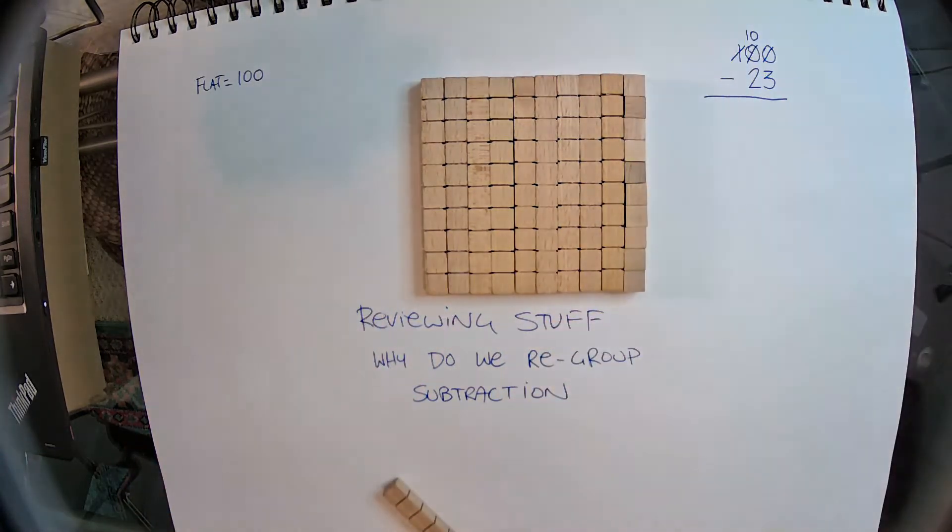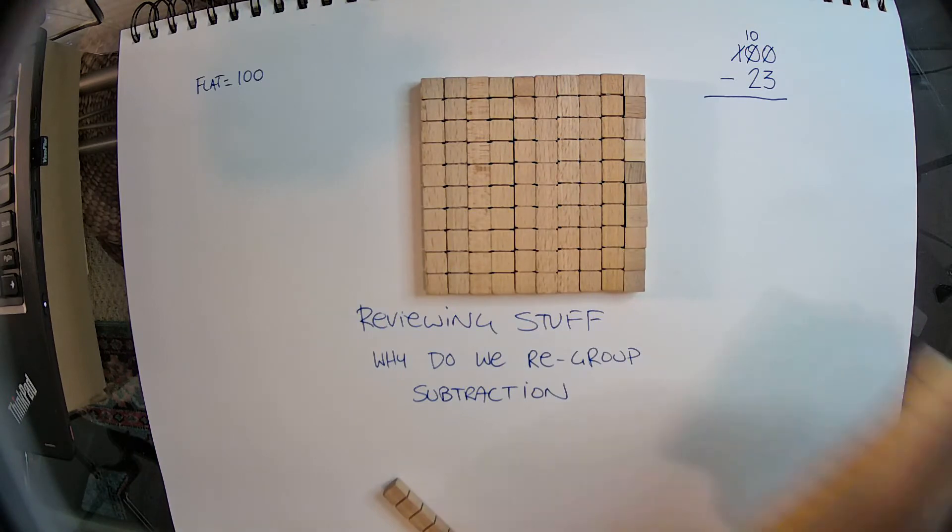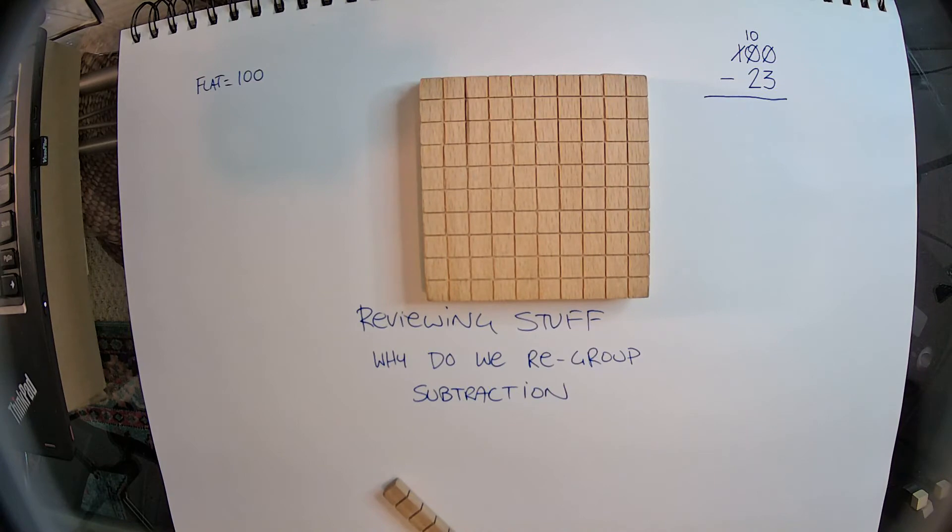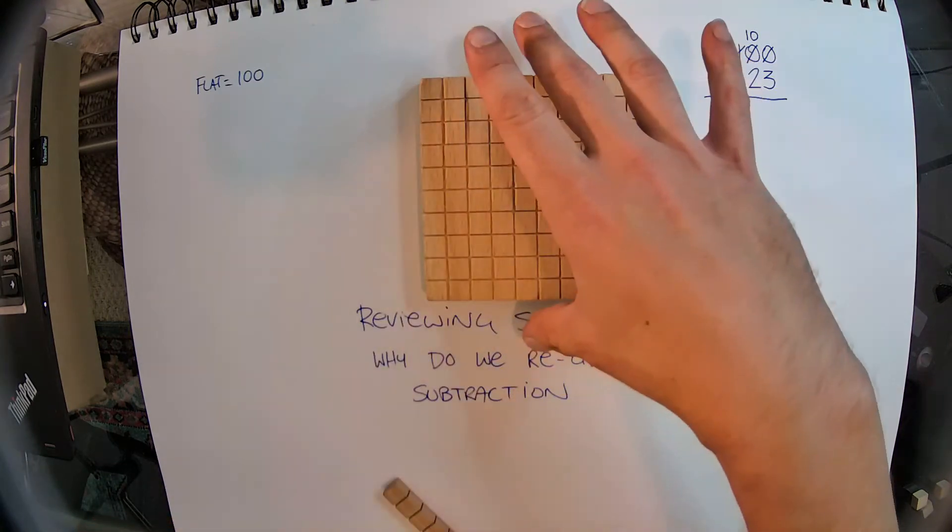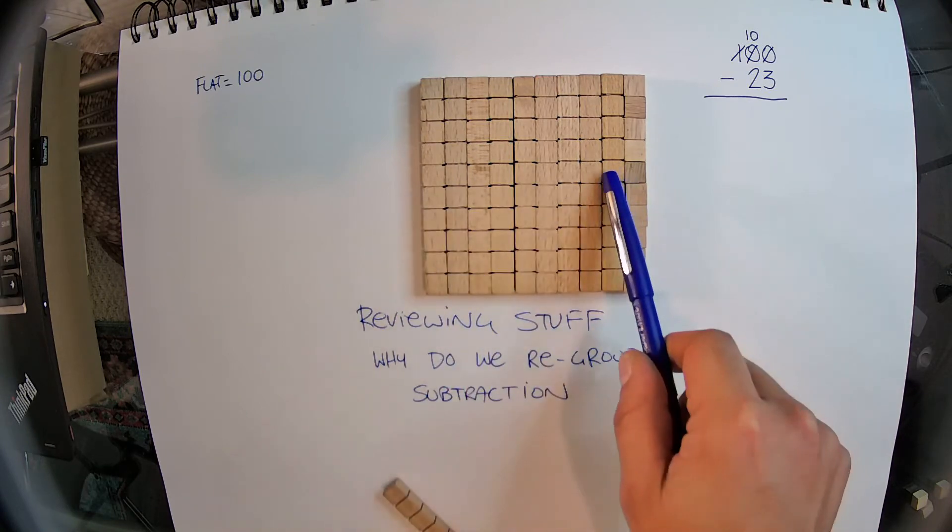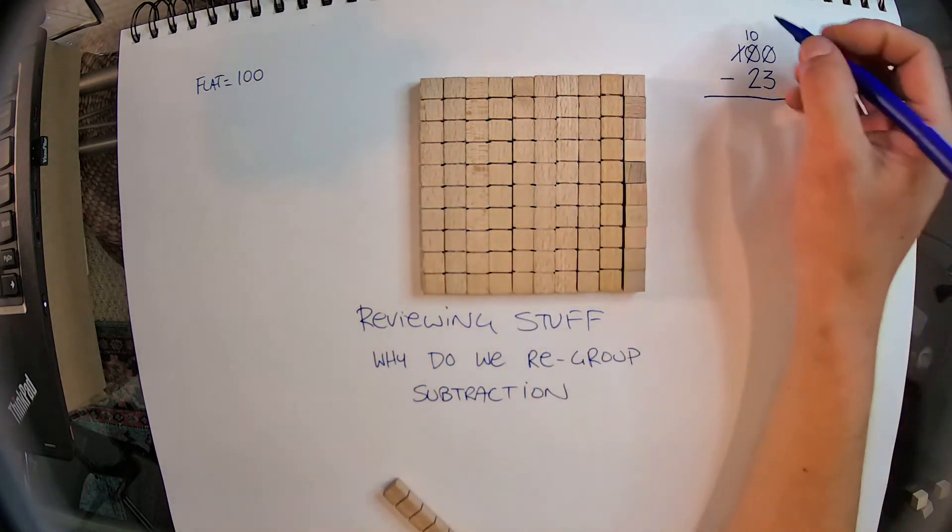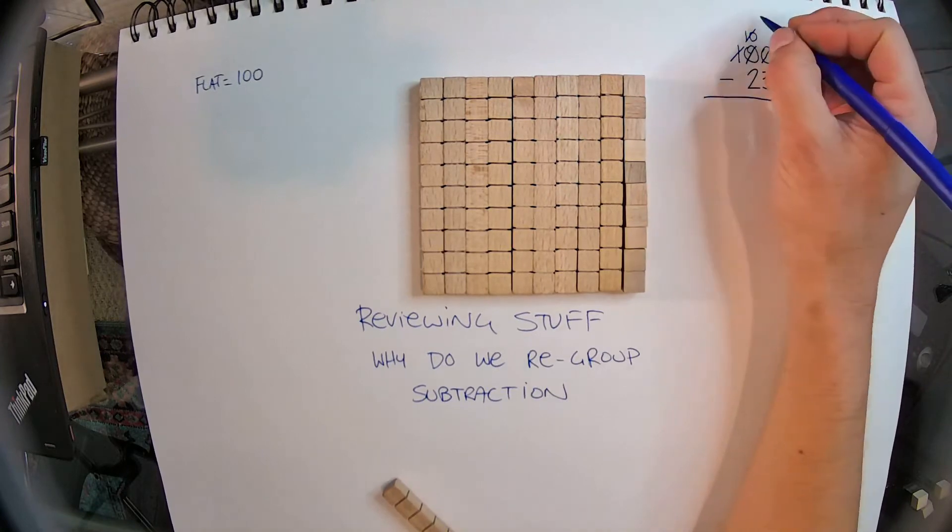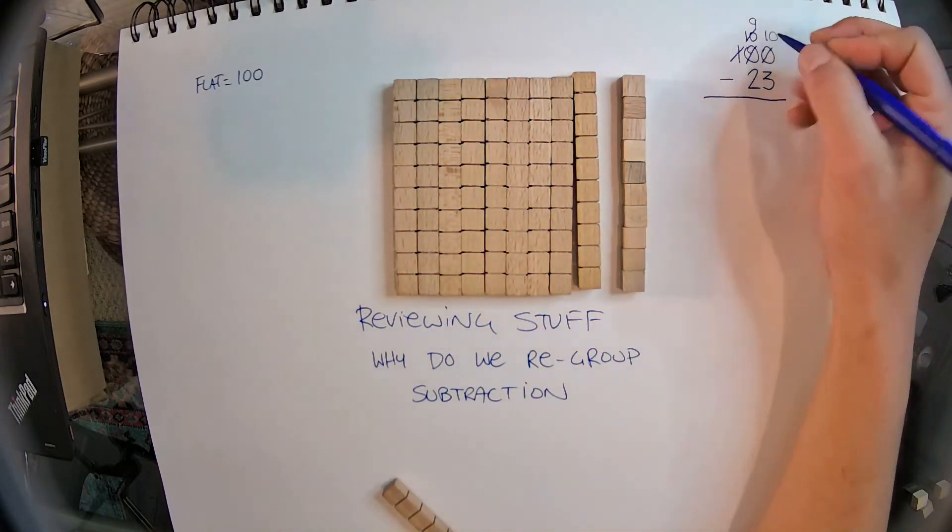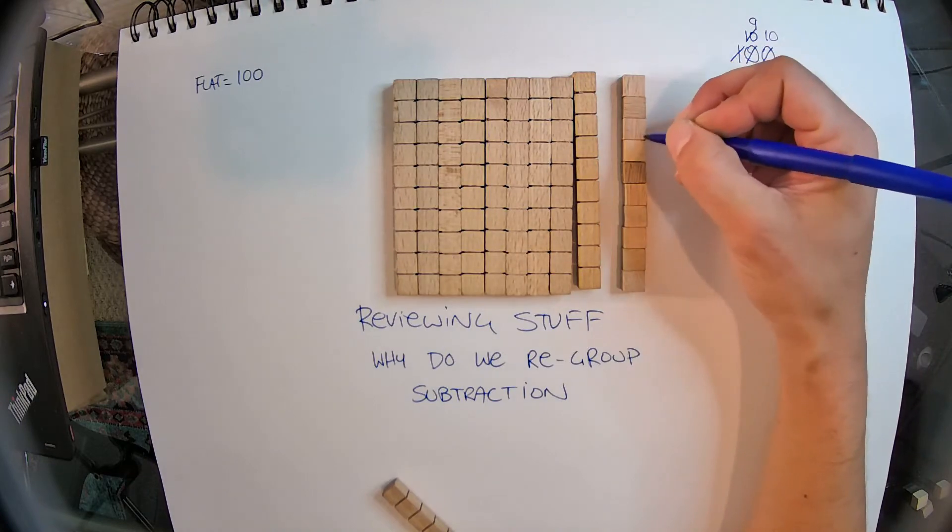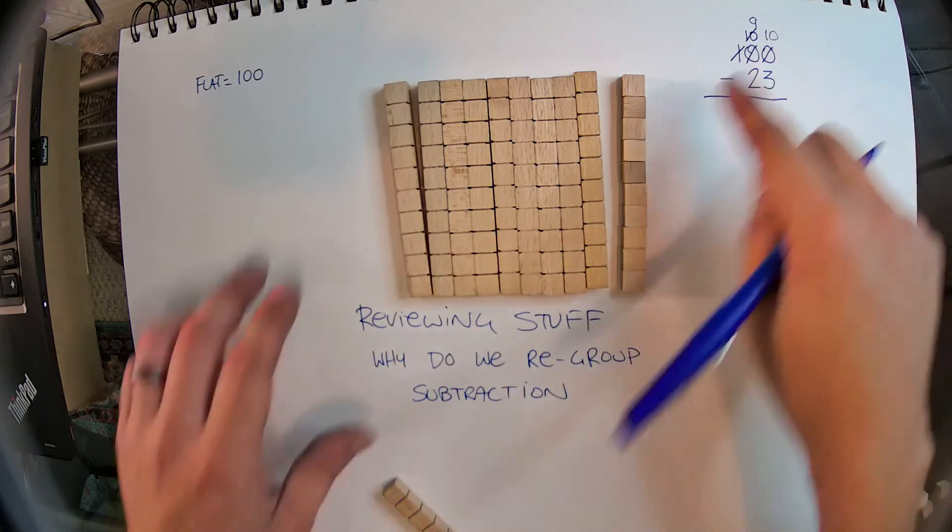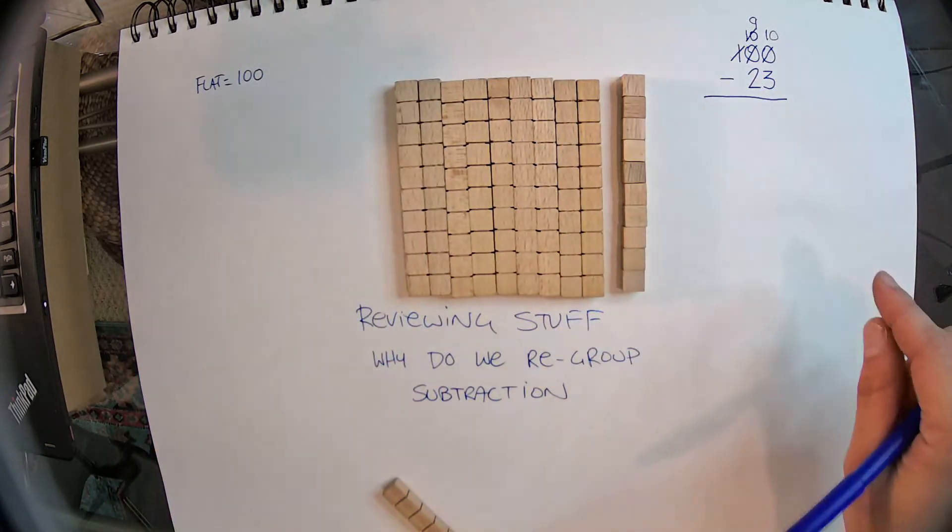And you can see it takes up the exact same amount of room. So now, that's still the exact same thing as our hundreds flat, the same value. So all we've done is we've traded it out for 10 tens. And then we traded one of our tens out. So now we only have 9 tens, and we have 10 ones. 1, 2, 3, 4, 5, 6, 7, 8, 9, 10. So that is what borrowing looks like in the blocks.